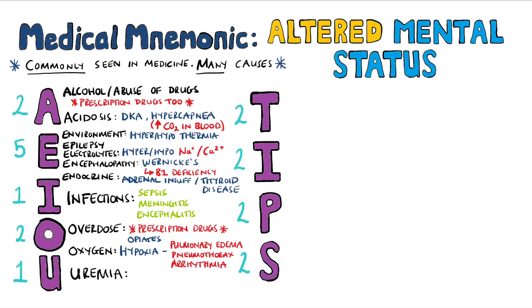U is for uremia, meaning an excess of urea in the blood. This comes from things like renal failure or congestive heart failure.